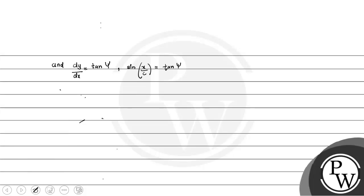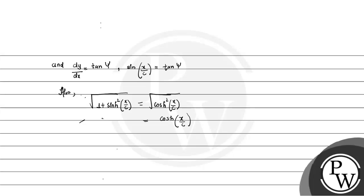Also, √(1 + sinh²(x/c)) = √(cosh²(x/c)) = cosh(x/c), after squaring both sides. Since we know that sin ψ = sinh(x/c) / cosh(x/c) — let this be equation (b).